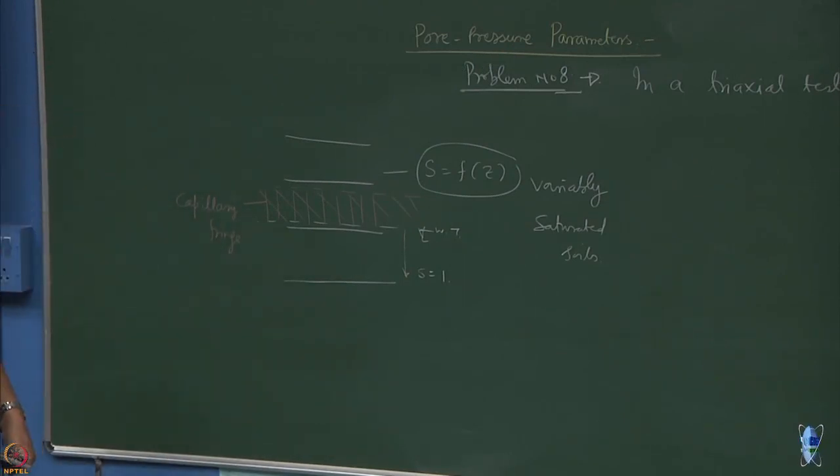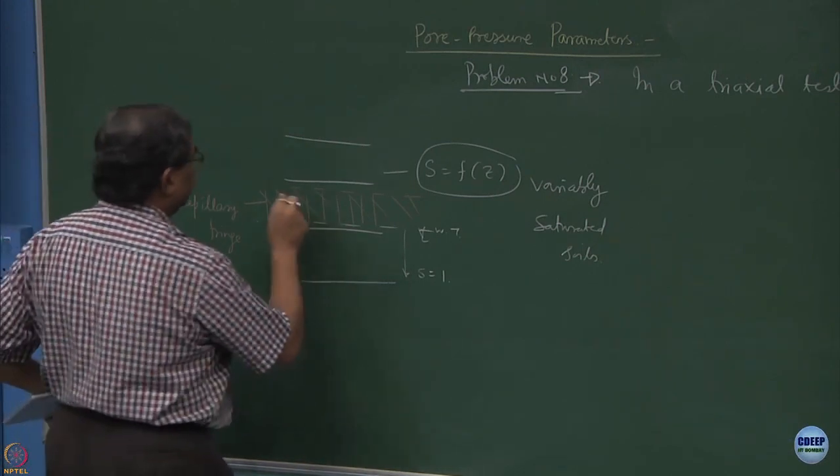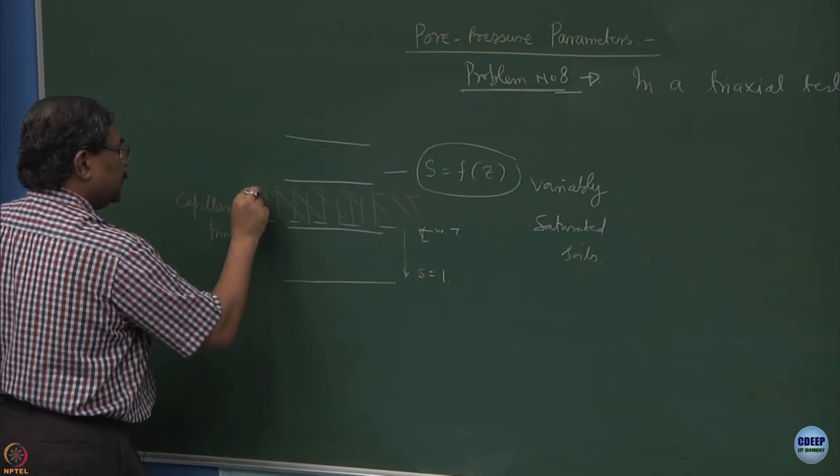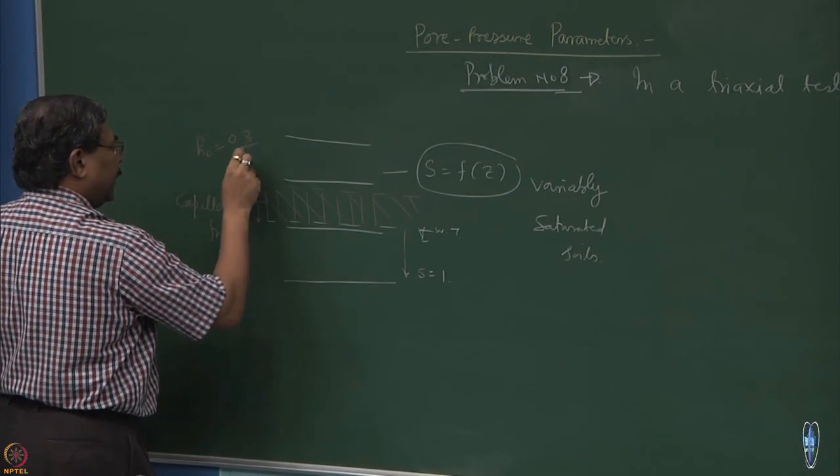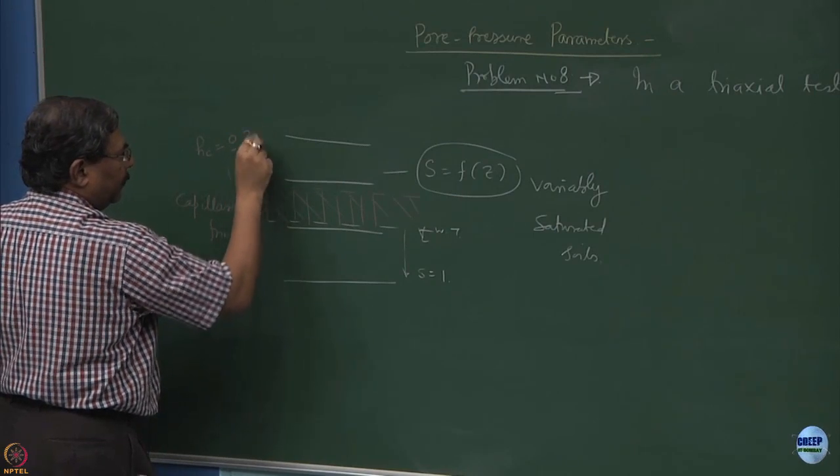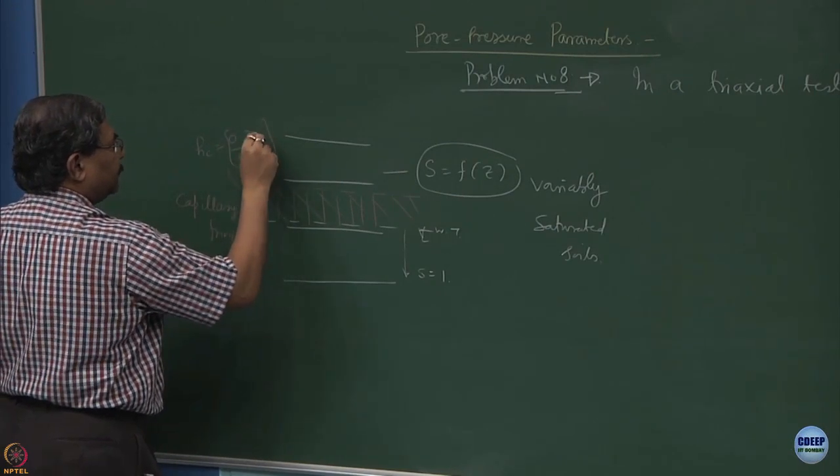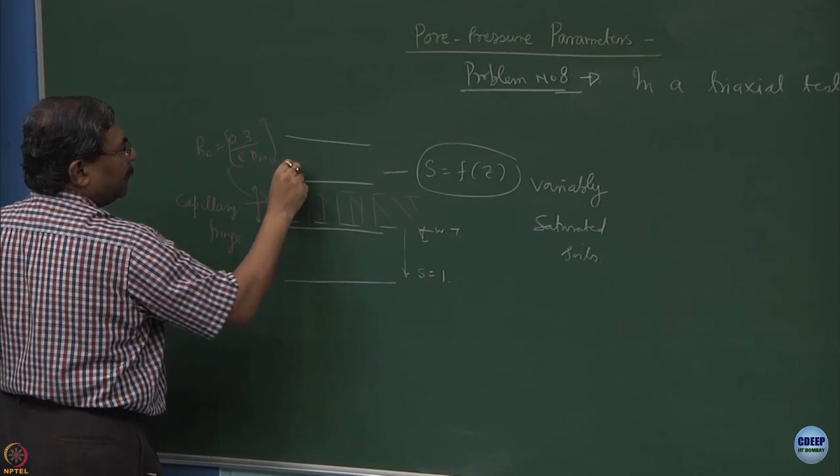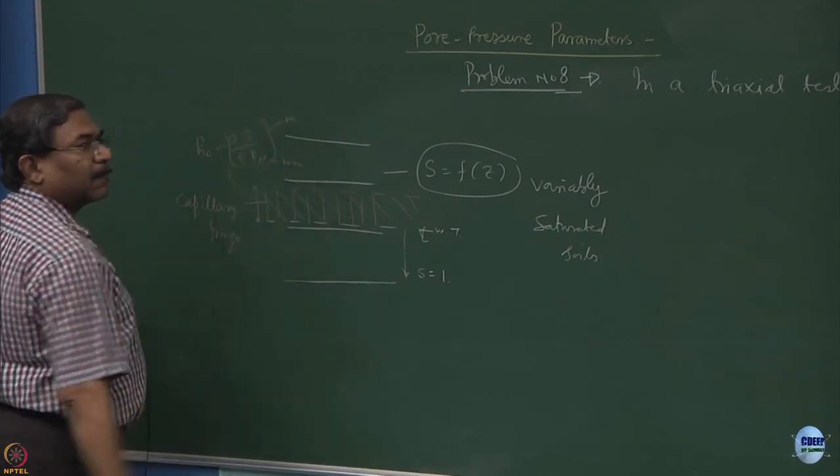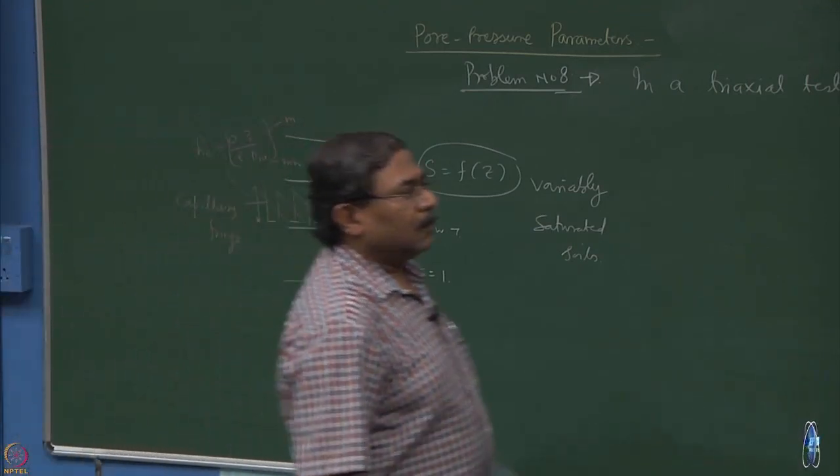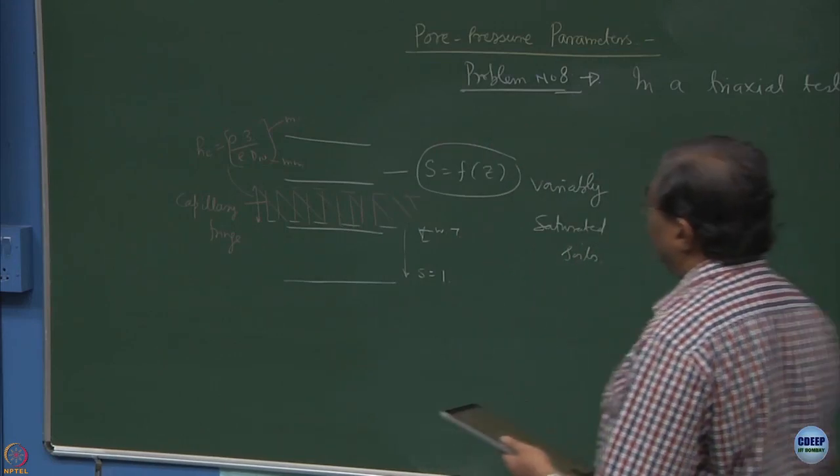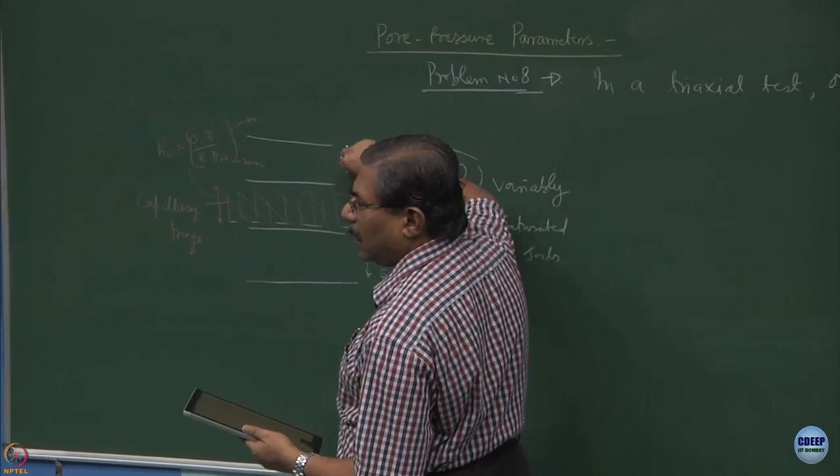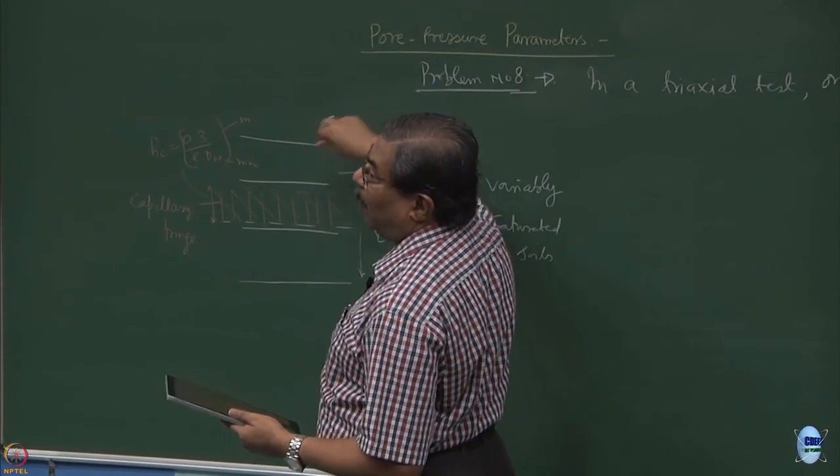We call this as a variably saturated soil deposit. Then I introduce the concept of capillary fringe here, if you remember. Because of this water table over here and depending upon the soil type and its compaction, you might be having a zone in which the capillarity dominates. We could compute this by using the hc value. This thing we classified as hc equal to some 0.3 upon ed10. This is in mm and this was in meters.